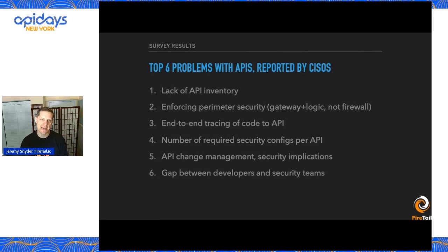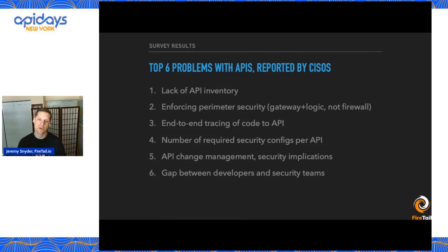So what are some API security recommendations? This top-six list is probably not super new. Just like we saw with cloud, developers get ahead of security, and there's a lack of awareness from the security side as far as what APIs are in use. On the perimeter security side, it's really about understanding the roles of the different network controls in place in front of APIs — things like API gateways and WAFs.